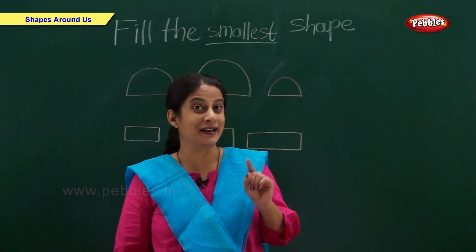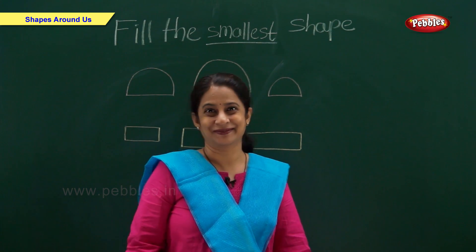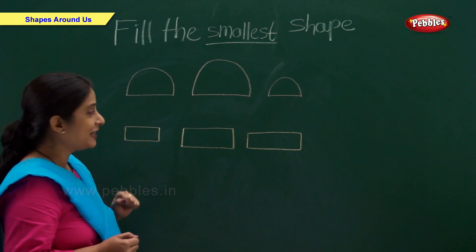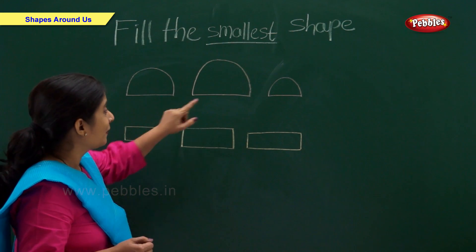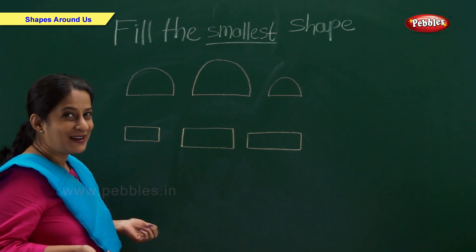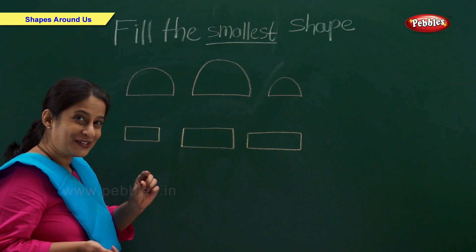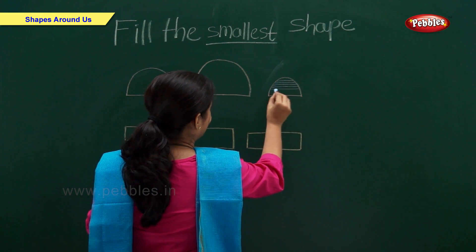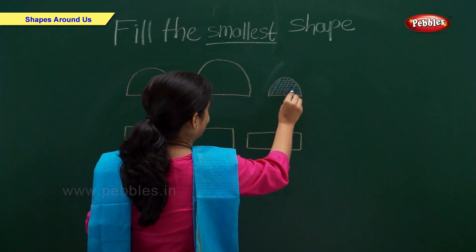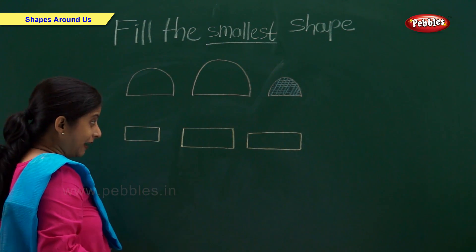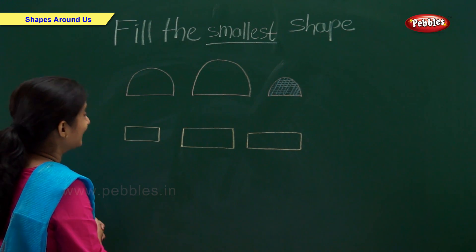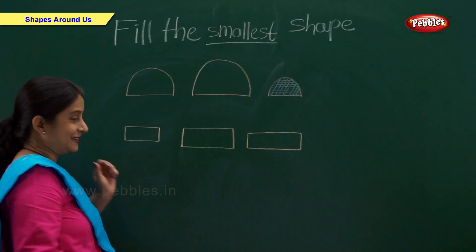You have to help me to identify the smallest shape so that I can fill it. I have three semicircles — which is the smallest? Is this the smallest one? Or this? Or this? Right, the third one is the smallest, so let's fill it. And now we have rectangles — which is the smallest? Right, the first one is the smallest, so let's fill it.